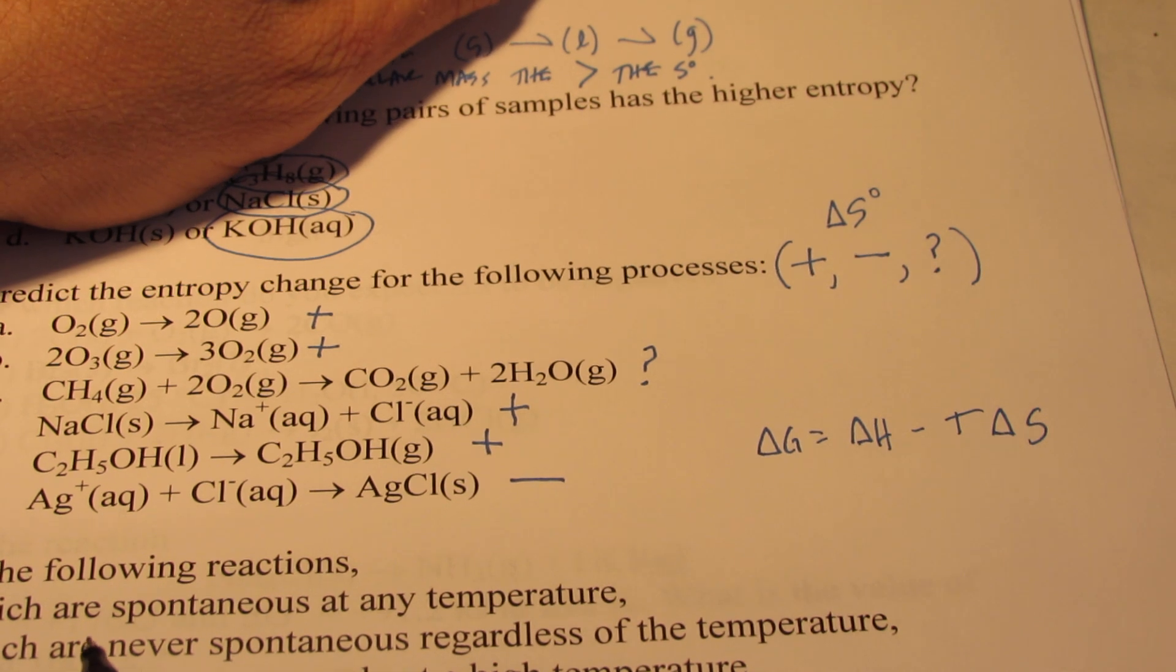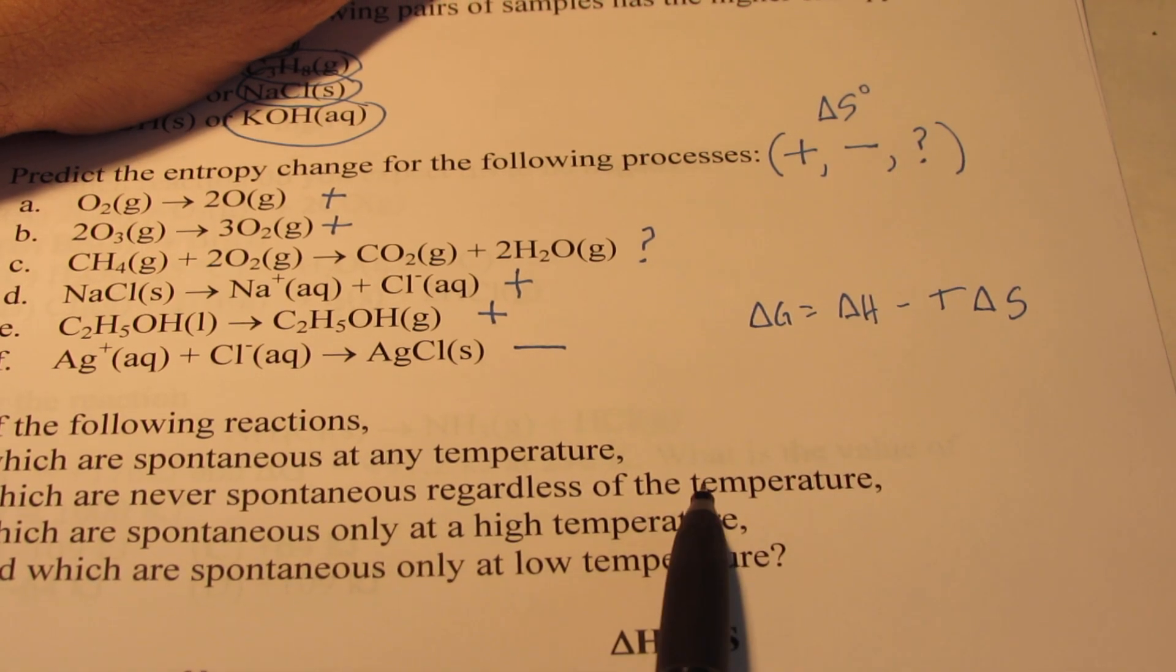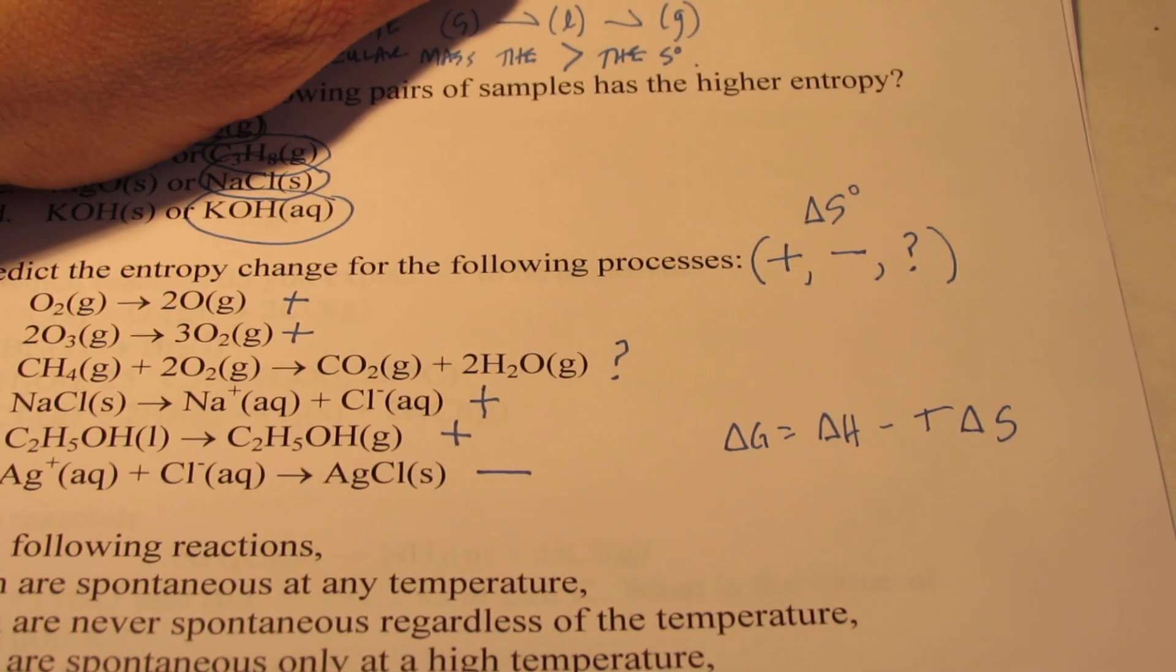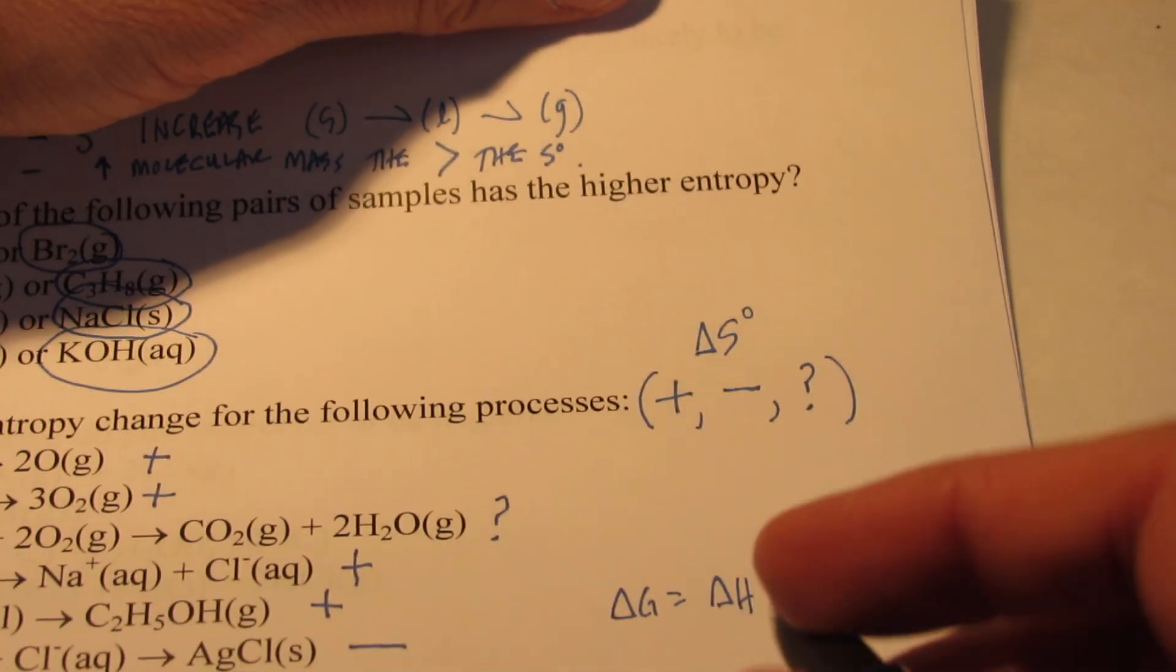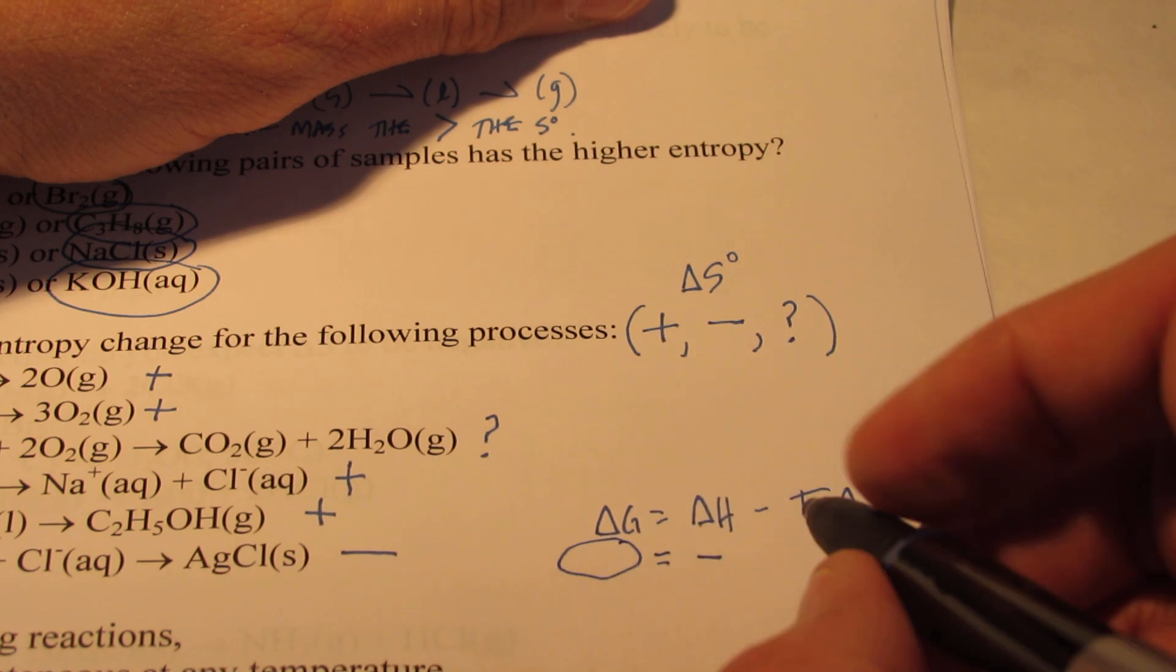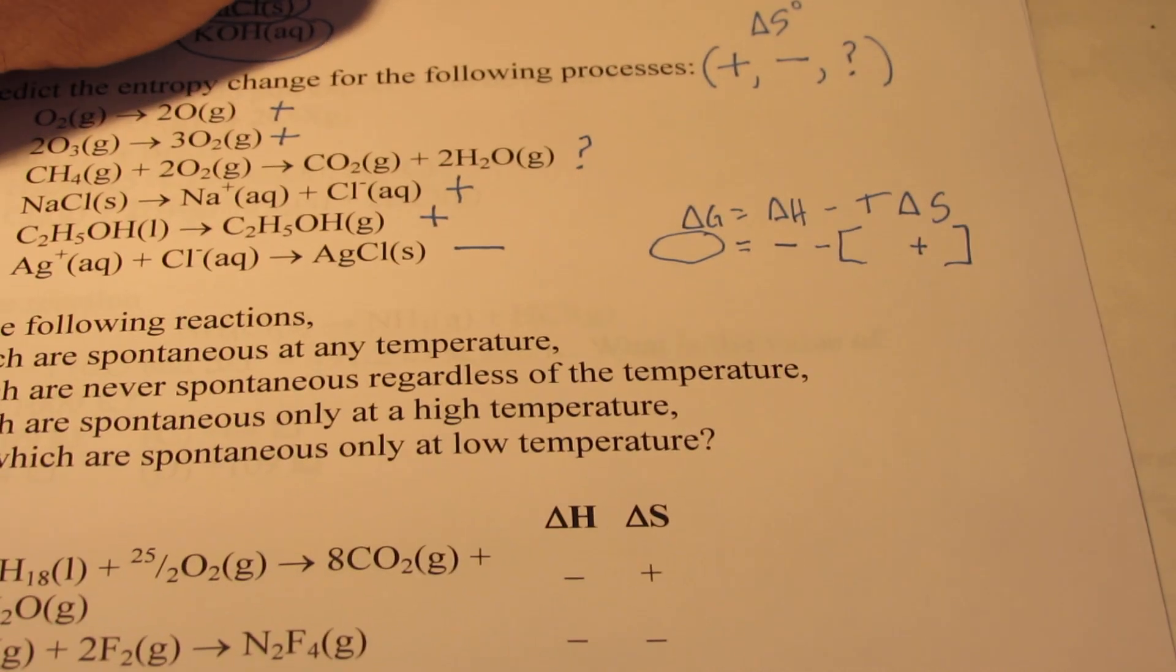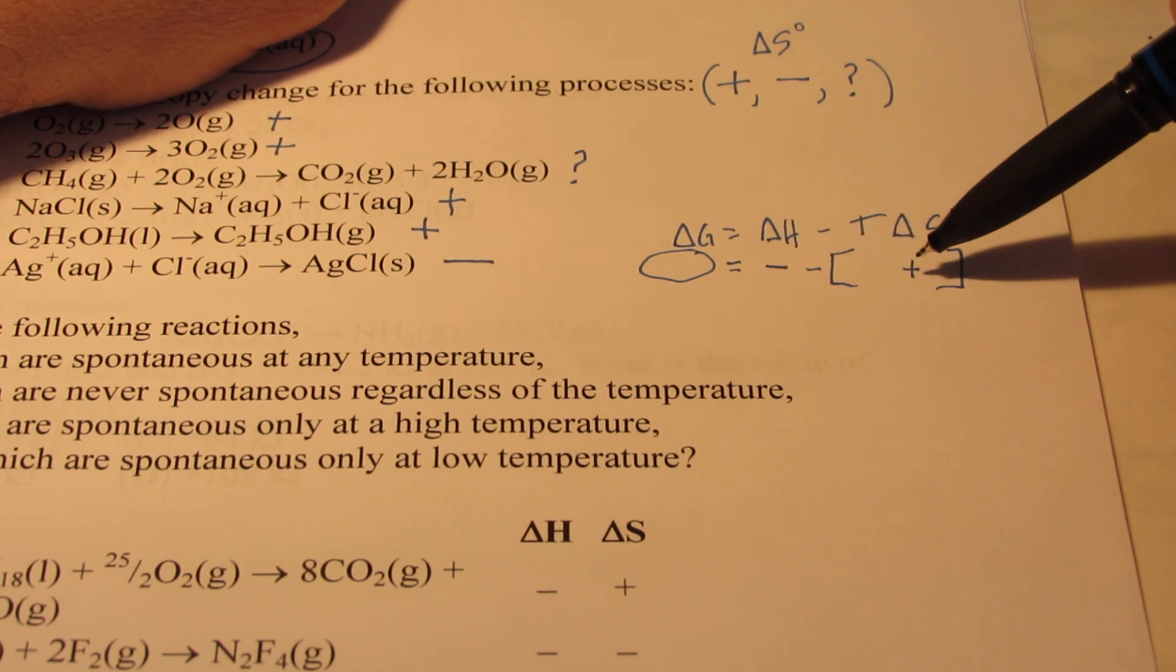So, on number three, what I want you to do is determine which of the following reactions are spontaneous at any temperature, which are never spontaneous, regardless of the temperature, which are spontaneous only when the temperature is high, and which are spontaneous when the temperature is low. So, let's take example letter A. You can see that the delta H is negative and the delta S is positive. Let's just plug those values in my equation. We have a negative delta H, all right? And that will eventually equal our delta G, won't it? We're going to subtract T delta S. Now, my delta S is positive. So, I'm going to put a positive in here. Now, we need to do a little bit of elementary school arithmetic here. What happens if I have a negative number and I subtract a positive number from it?